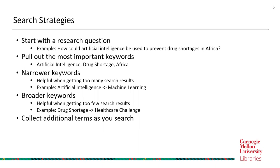After identifying the most important keywords, you can also find additional narrow and broader keywords to help with your search. Narrow keywords are helpful when you're getting too many search results and need to narrow things down. For example, 'artificial intelligence' can be narrowed to 'machine learning.' Broader keywords help when you're getting too few results and need to expand your search.